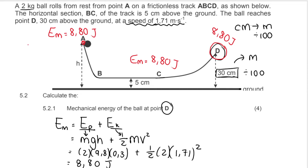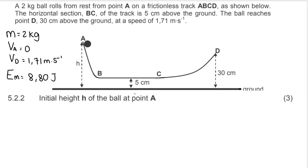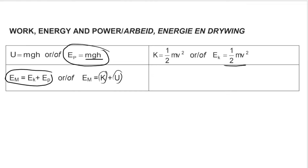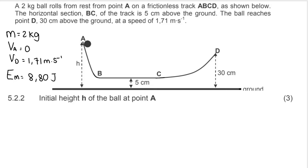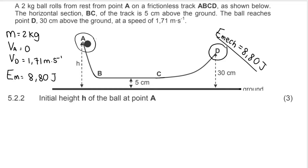That's because of the principle of conservation of mechanical energy. My next question asks me to calculate the initial height of the ball at point A. A lot of students will try to use E_P = mgh alone, but that gives two unknowns — we don't know E_P at A separately. So we must use the principle of conservation of mechanical energy: mechanical energy at one point equals mechanical energy at another.